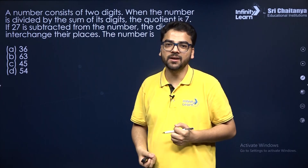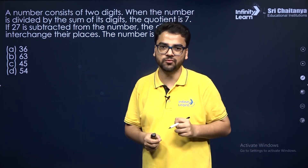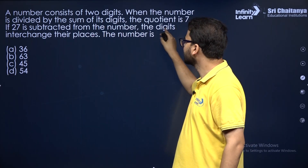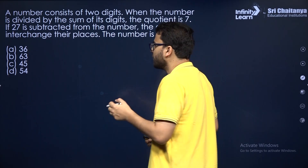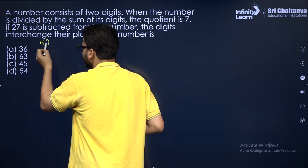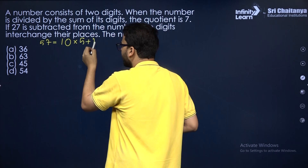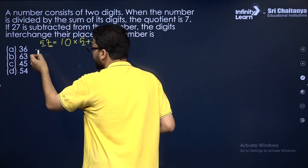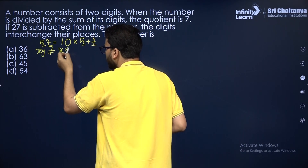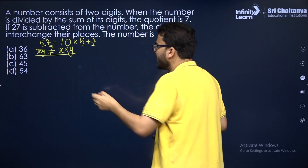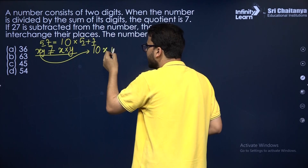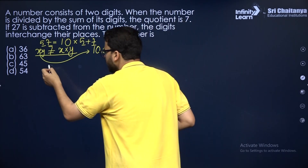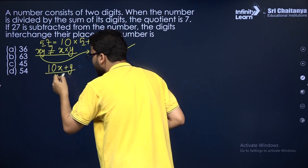Let's do a word problem. A number consists of two digits. When the number is divided by the sum of its digits, the quotient is 7. Whenever you have a two-digit number — say 57 — you write it as 10 times 5 plus 7, where 5 is the tens digit and 7 is the units digit. So assuming our two-digit number has tens digit x and units digit y, the number is 10x plus y. This is the standard form. So the number 10x plus y divided by x plus y equals 7.